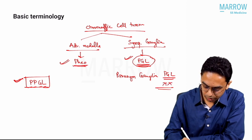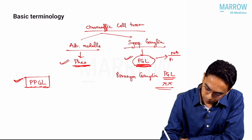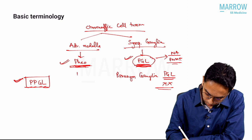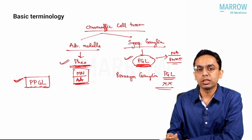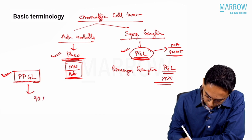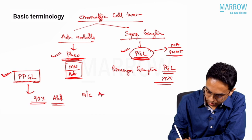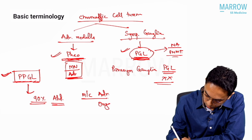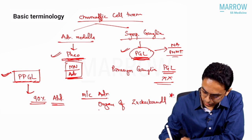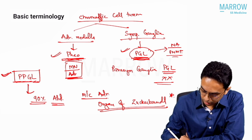Functional tumors include pheochromocytoma and paraganglioma. Paraganglioma can secrete only noradrenaline because PNMT is absent, while the adrenal medulla secretes both, most commonly metanephrine or adrenaline. Overall, 90% of pheochromocytoma-paragangliomas are abdominal. The most common site is the adrenal, followed by the organ of Zuckerkandl. This has been asked: the most common site of extra-adrenal pheochromocytoma or paraganglioma is the organ of Zuckerkandl.